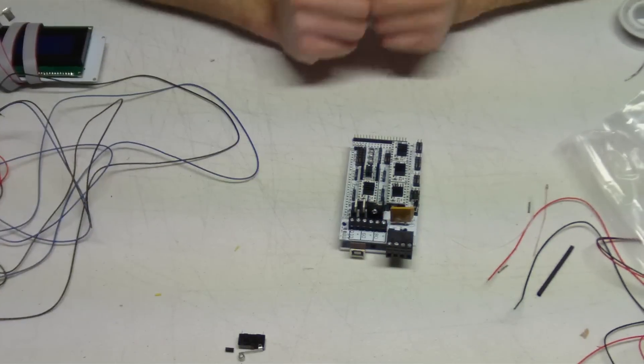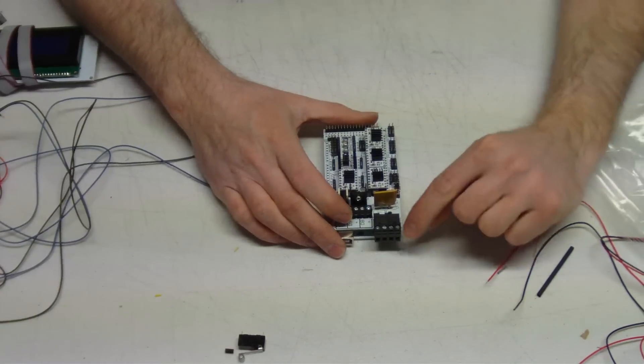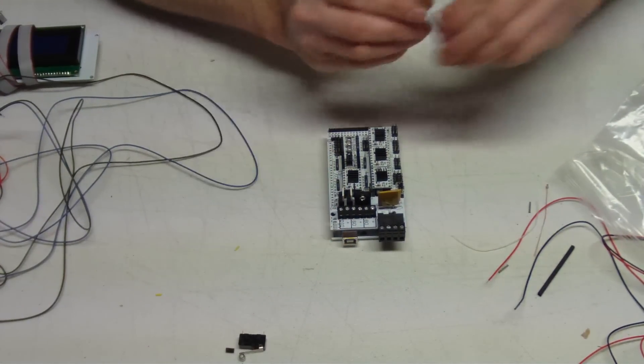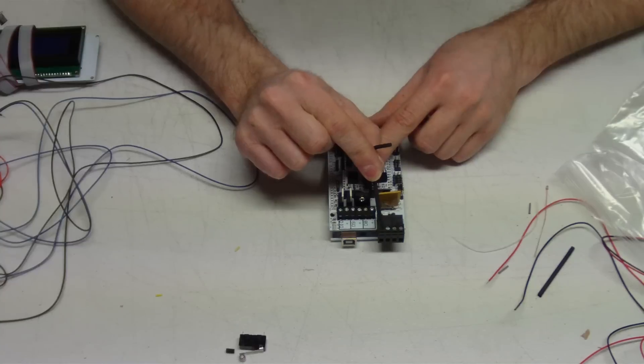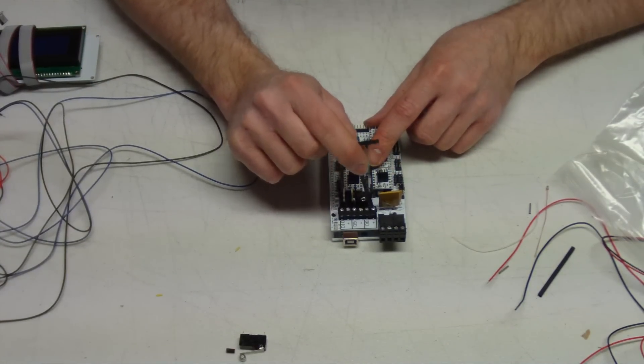And then other than that, we have our RAMPS electronics right here. It is labeled on the board, so we're going to put in our power supply voltage here. This one right here, we're going to do it minus, plus, minus, plus. Your D8 is for your heat bed wires.